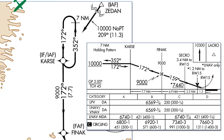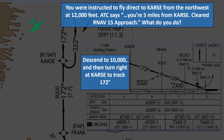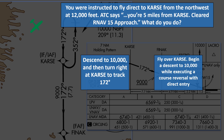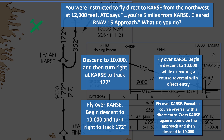Now let's say we're coming from the northwest. Question 3: You were instructed to fly direct to Karst from the northwest, this time at a higher altitude of 12,000 feet. ATC says you're 5 miles from Karst, cleared RNAV 1.5 approach. What do you do? Descend to 10,000 and then turn right at Karst to track 172 degrees. Fly over Karst, begin a descent to 10,000 while executing a course reversal with the direct entry. Fly over Karst, begin descent to 10,000 and turn right to track 172 degrees. Or, fly over Karst, execute a course reversal with the direct entry, cross Karst again inbound on the approach, and then descend to 10,000.